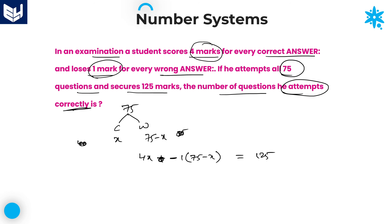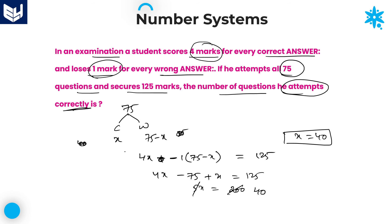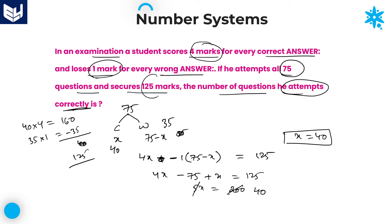Total marks obtained is 125 marks. Here, 4x minus 75 plus x is equal to 125. From this, 5x equals — minus 75 goes to the right side and becomes plus 75 — so 125 plus 75 is 200. Therefore, x is equal to 40. We got the same answer as our initial assumption. Therefore, the number of questions answered correctly is 40 and wrong answer questions are 35. So 40 into 4 equals 160, and wrong answers 35 into 1 equals 35. If you subtract 35 from 160, you get 125. We got the same answer as given in the question.